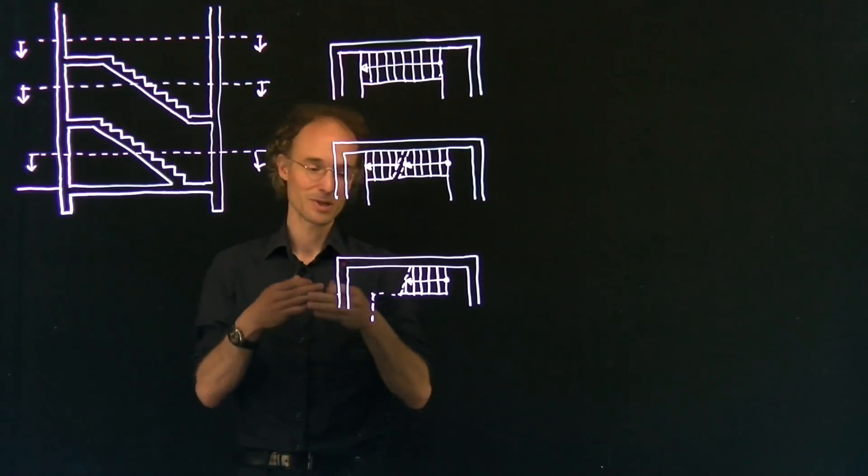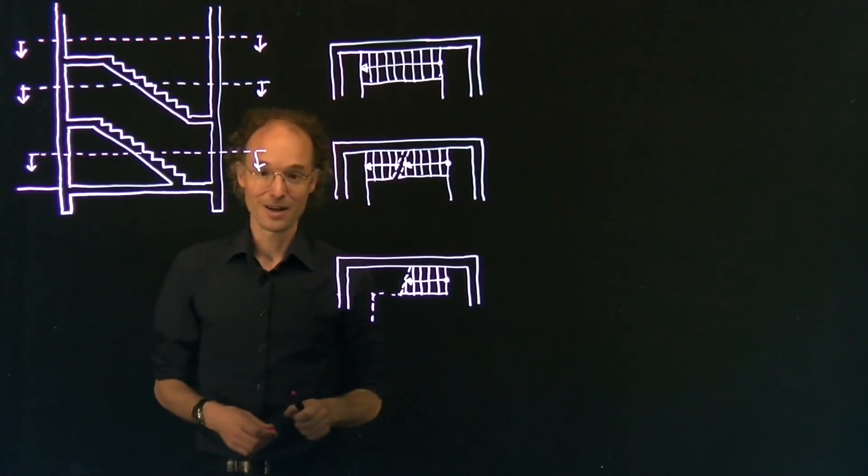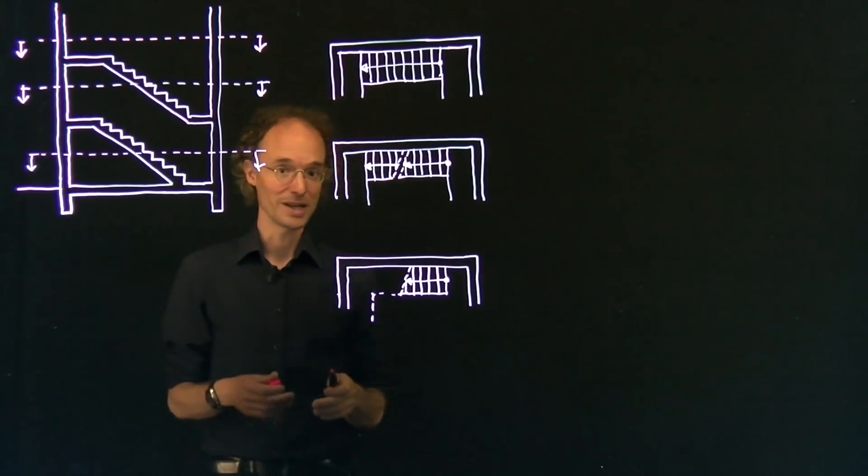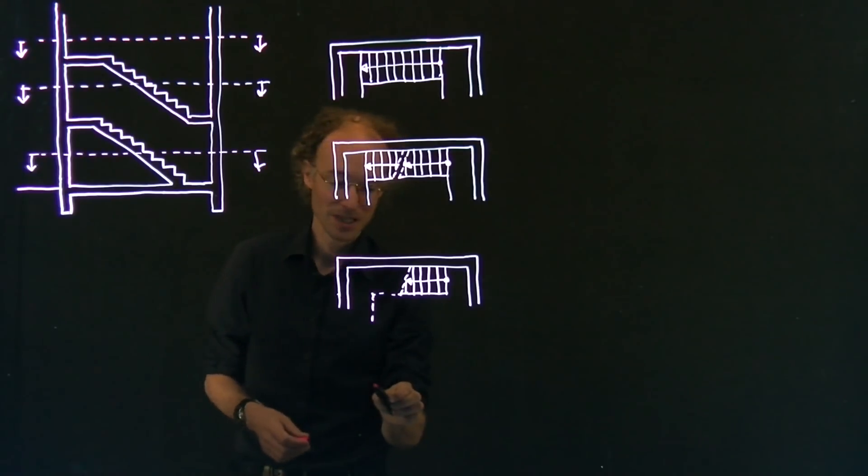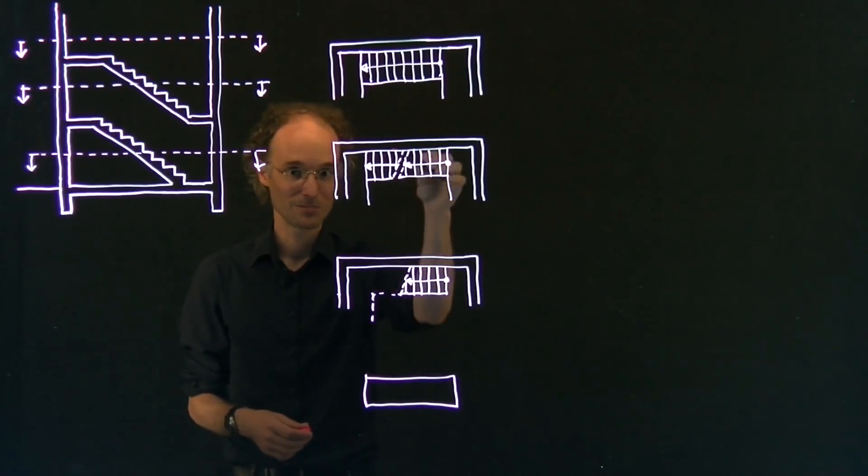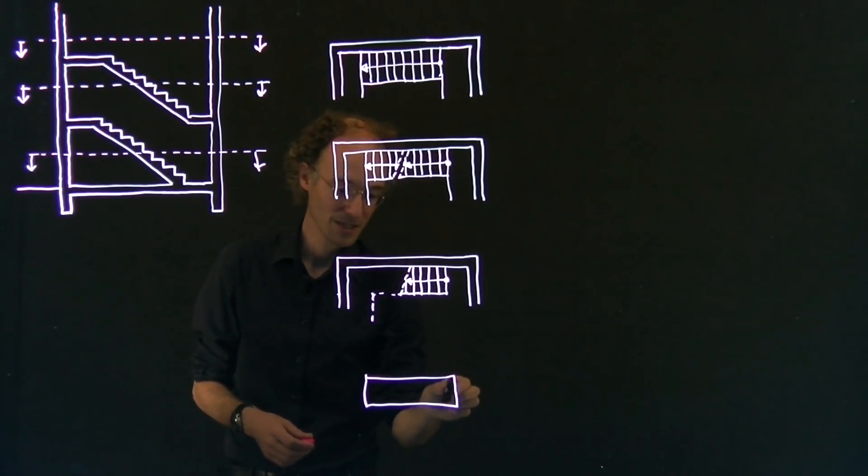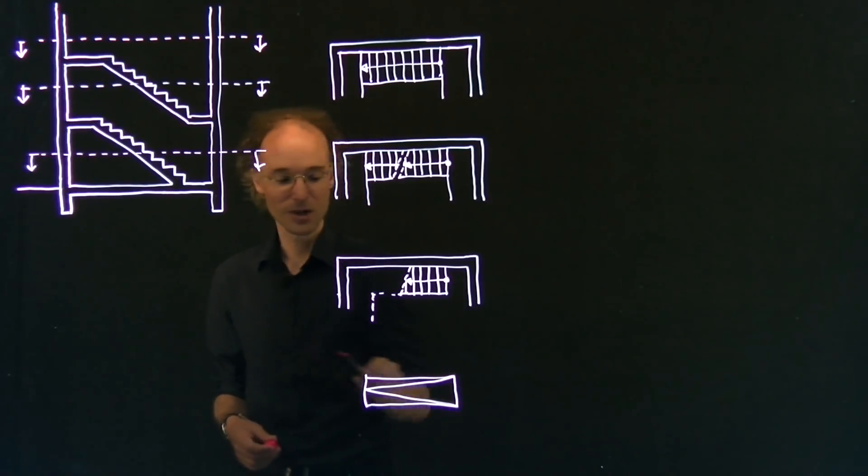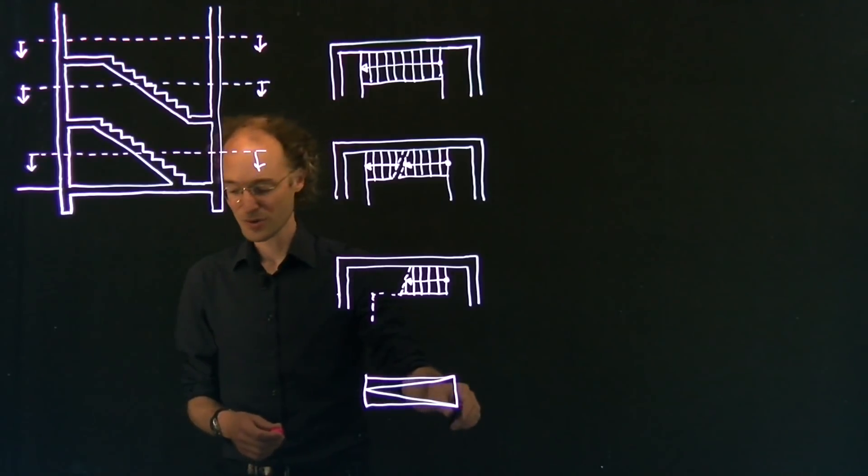If you have a ramp, a part of the floor that goes up without steps, for example in an underground parking, you do it more or less the same. But of course, you don't draw steps. You can draw an arrow, just like in the stairs. But you could also draw one big triangle, which indicates that this ramp slowly goes up. This is the lowest point, this is the highest point. So this is how you draw a ramp.